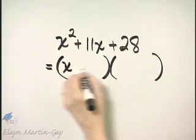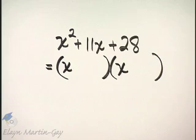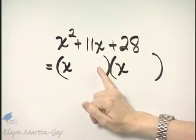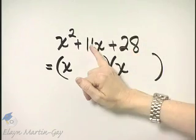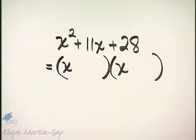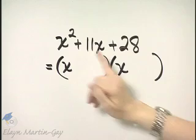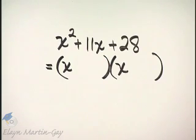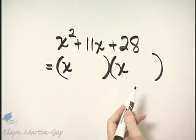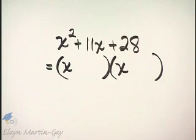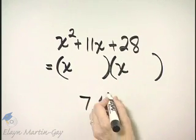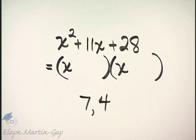Of course x times x will give us x squared. Then we are looking for two factors of 28 whose sum is 11. We need positive factors of 28 whose sum is 11. I know 7 times 4 is 28 and 7 plus 4 is 11, so those are my two numbers.